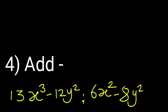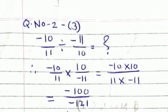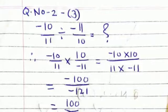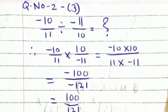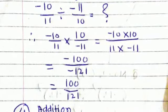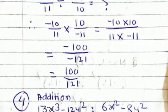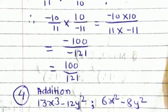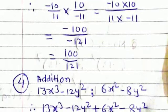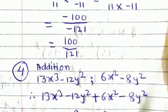Question number 2.3. Minus 10 upon 11 divided by minus 11 upon 10. We put this example as minus 10 upon 11 into 10 upon minus 11. At numerator minus 10 into 10. At denominator 11 into minus 11. Answer is minus 100 divided by minus 121. Minus minus gives plus. So answer is 100 upon 121.